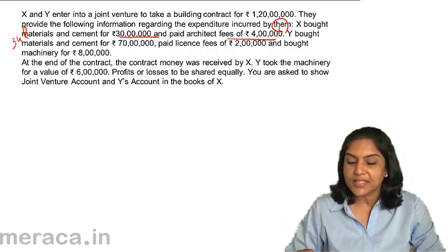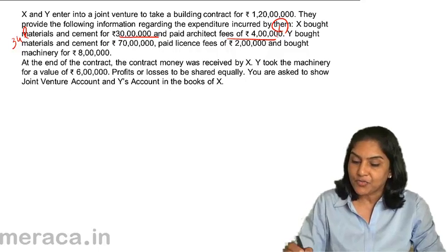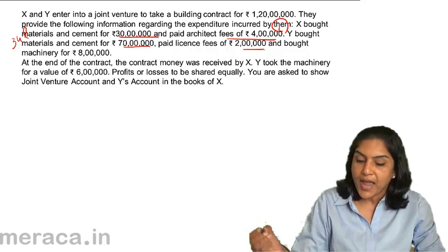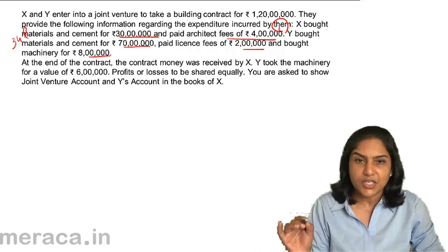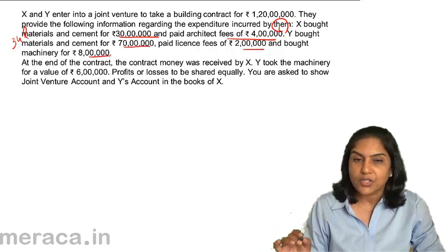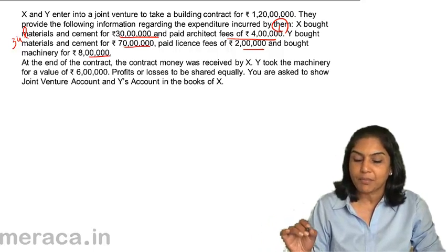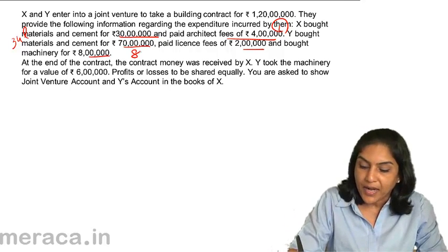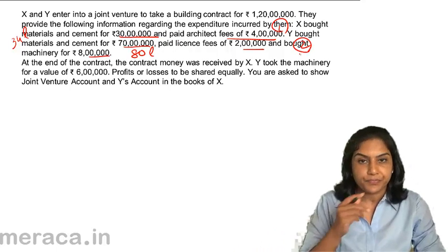Y bought materials and cement for 70 lakhs, paid license fees of 2 lakhs, and bought machinery for 8 lakhs. The total expenditure by Y is 70 plus 2 plus 8, which is 80 lakhs spent by Y.